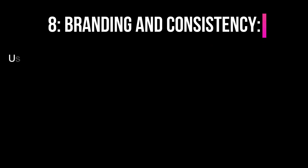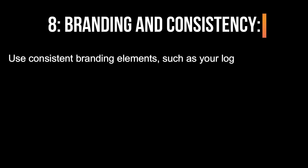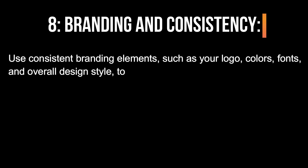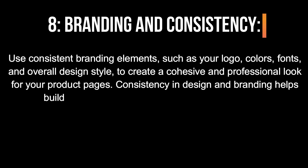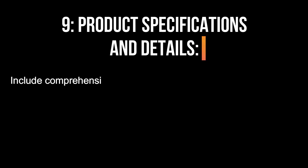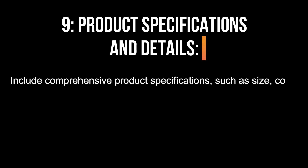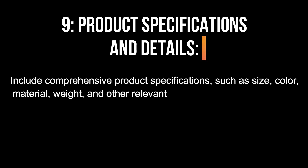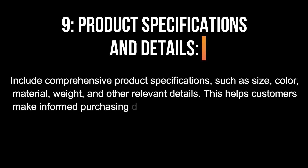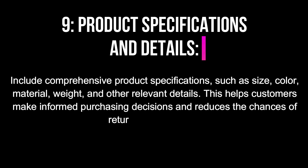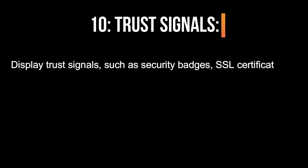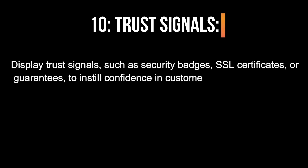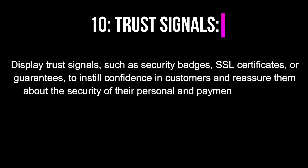8. Branding and Consistency. Use consistent branding elements, such as your logo, colors, fonts, and overall design style, to create a cohesive and professional look for your product pages. 9. Product Specifications and Details. Include comprehensive product specifications, such as size, color, material, weight, and other relevant details. This helps customers make informed purchasing decisions and reduces the chances of returns or exchanges. 10. Trust Signals. Display trust signals, such as security badges, SSL certificates, or guarantees, to instill confidence in customers and reassure them about the security of their personal and payment information.